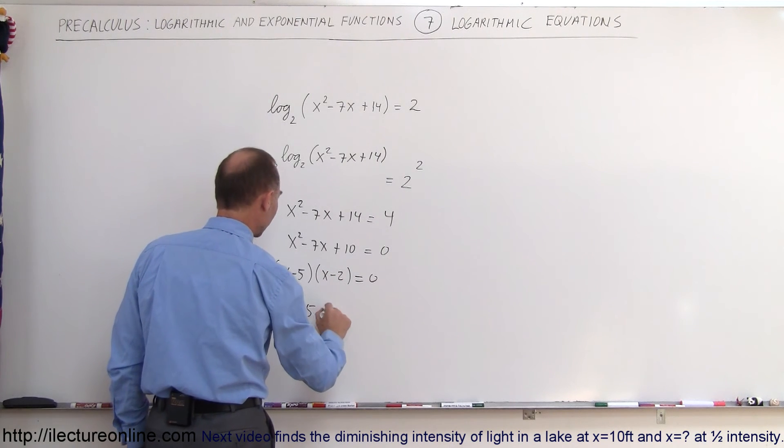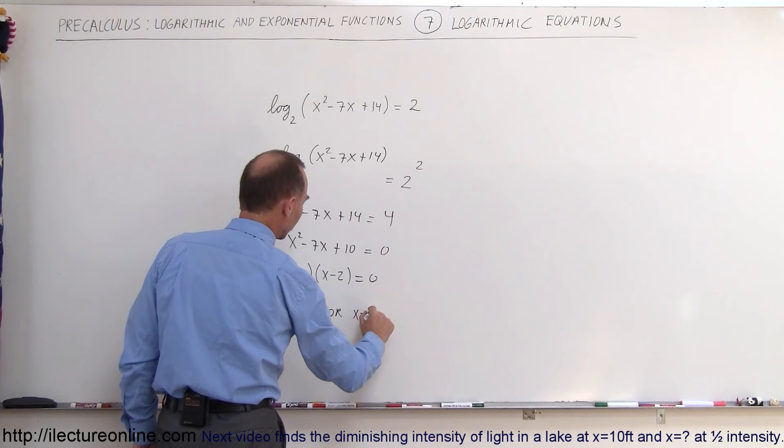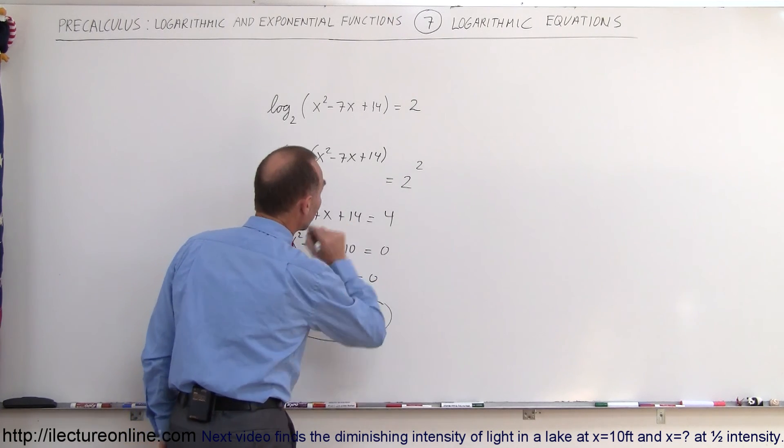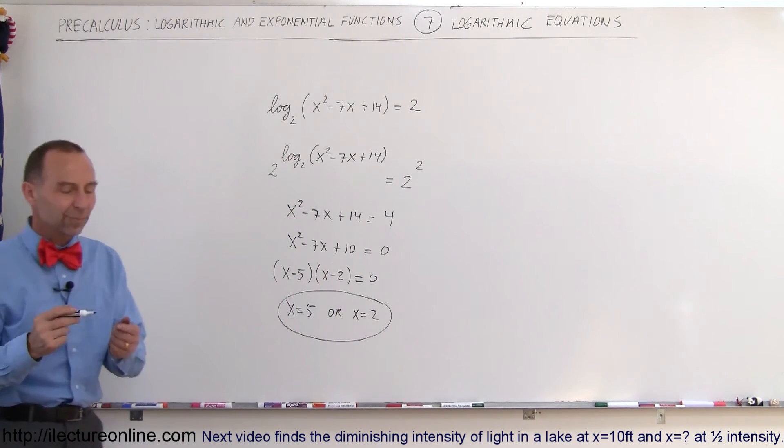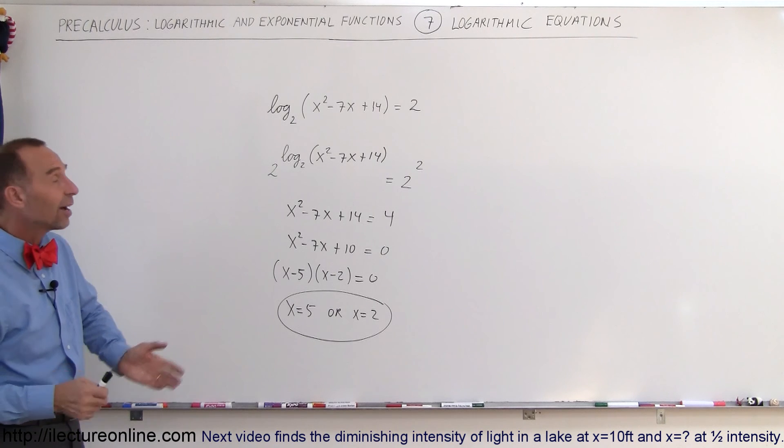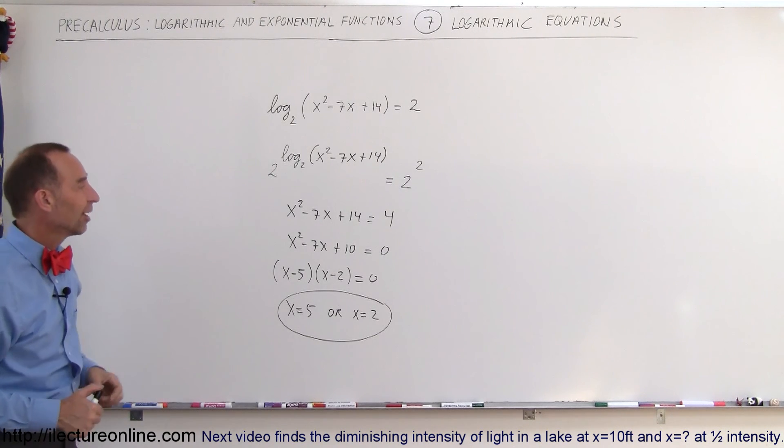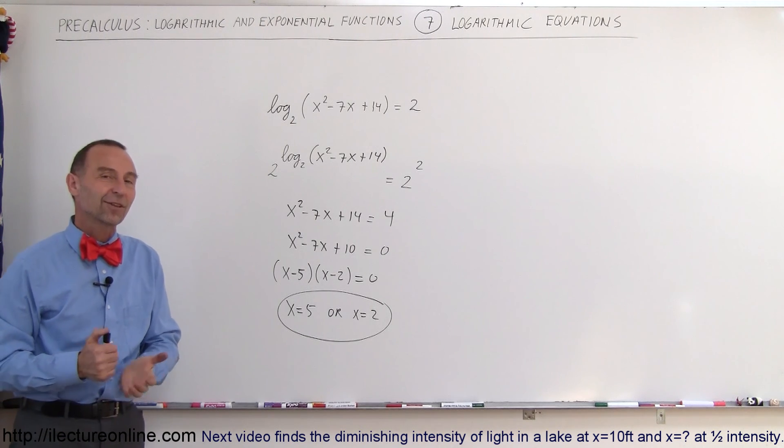Therefore, we get x = 5 or x = 2 as the solution to that original equation. Sometimes it's a quadratic equation in disguise—take the antilog of both sides and you can solve for x. That's how it's done.